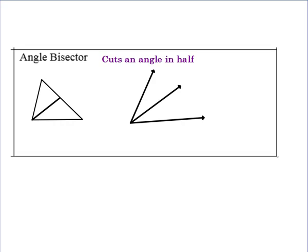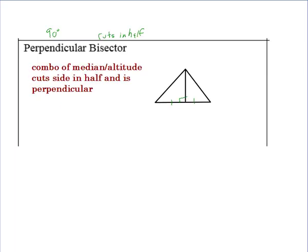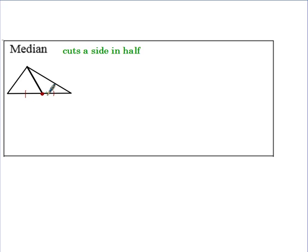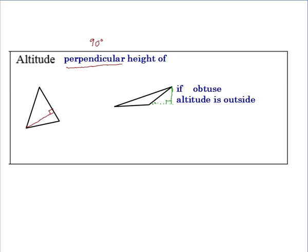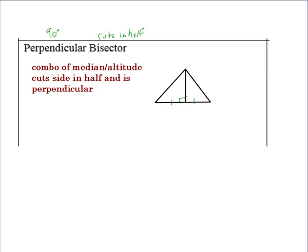And then finally, the angle bisector. We talked about angle bisectors in Unit 1. In a triangle, you connect from a vertex to the opposite side and cut the angle in half, so angle 1 would be congruent to angle 2. One important note: this does not need to be perpendicular — it doesn't need to meet at a 90-degree angle. Same with medians. The only ones that need to be 90 degrees are altitudes and perpendicular bisectors.